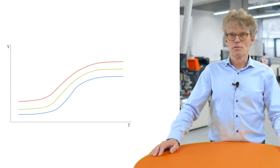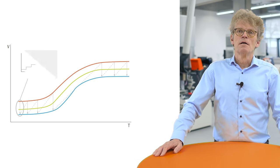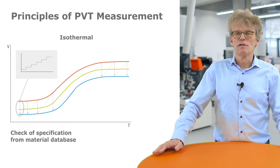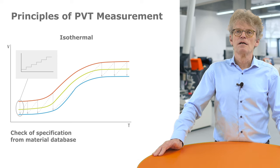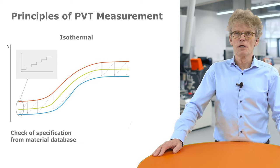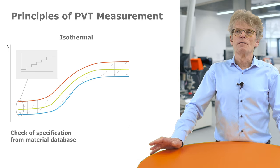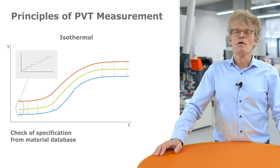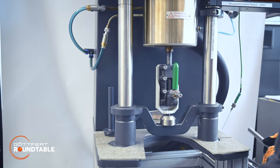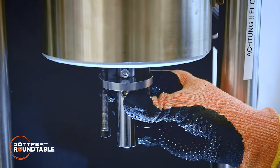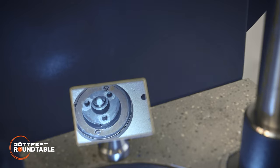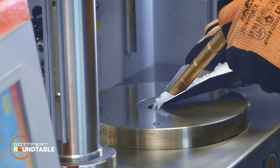The measurement of PVT is done either isothermal or isobaric. The isothermal measurement, which is the classical measurement, is done at a constant temperature and the pressure is changed. Then the measurement is performed consequently at different temperatures to get the full behavior of shrinkage as a function of pressure and temperature.